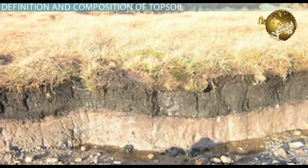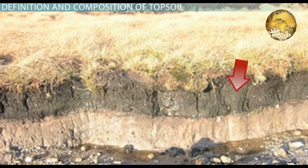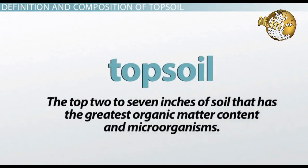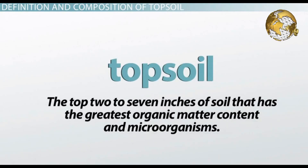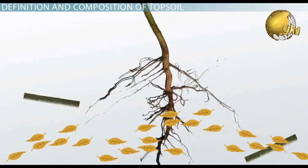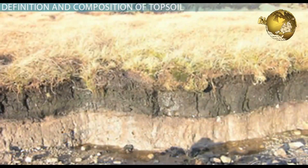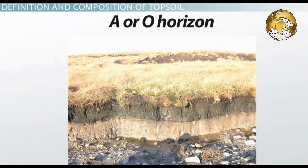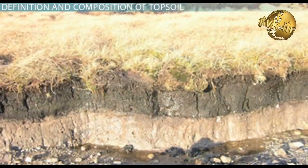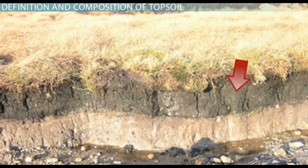Have you ever been to a riverbank and noticed different layers of soil? You might have observed that the top layer of soil was dark colored and lush. This is the topsoil, often referred to as the A or O horizon in soil classification systems — it is the very top layer.